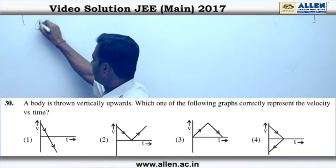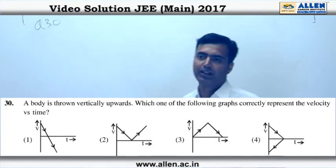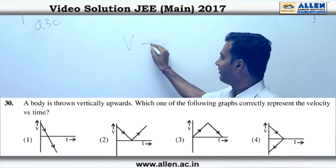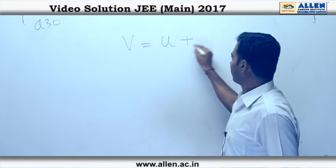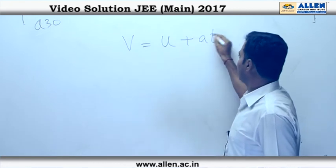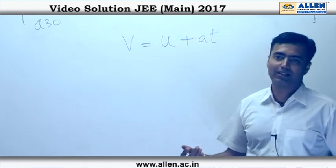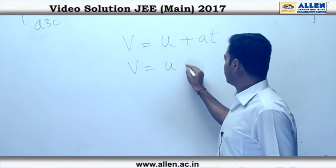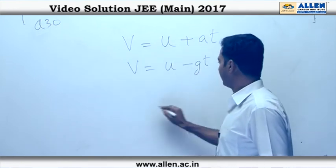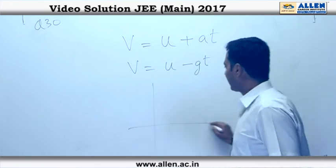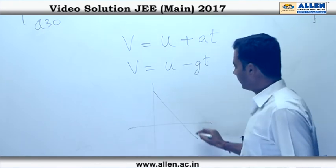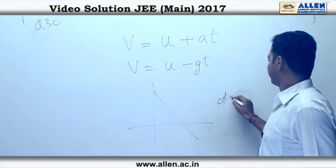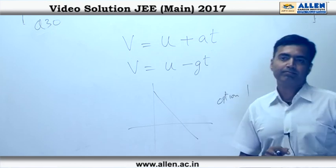Question 30. The equation for velocity will be given by u plus at, with acceleration being a constant equal to acceleration due to gravity. So V equals u minus gt — a straight line with a negative slope. That is option 1.